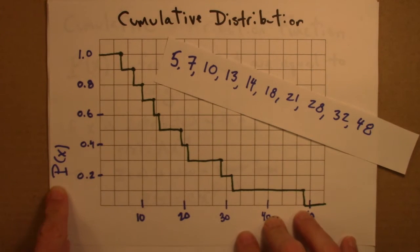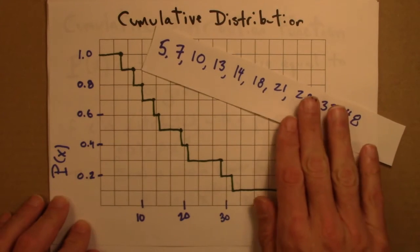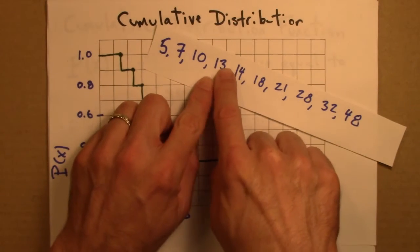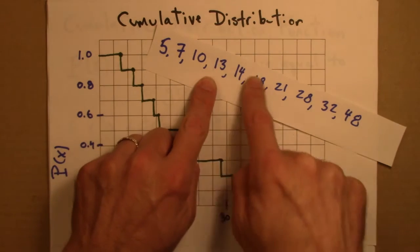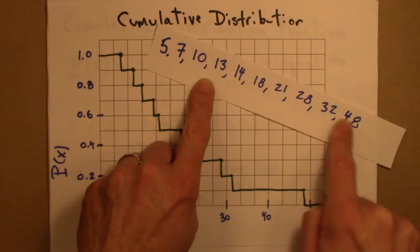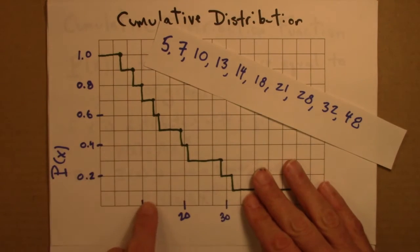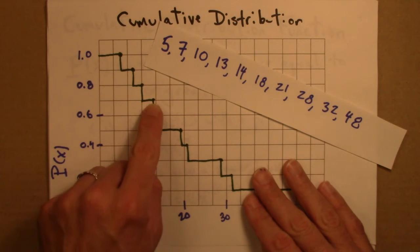So for example, 70% of my data is 13 or larger, 7 of the 10. And accordingly, where did I draw the 13 point? Right there, 0.7.